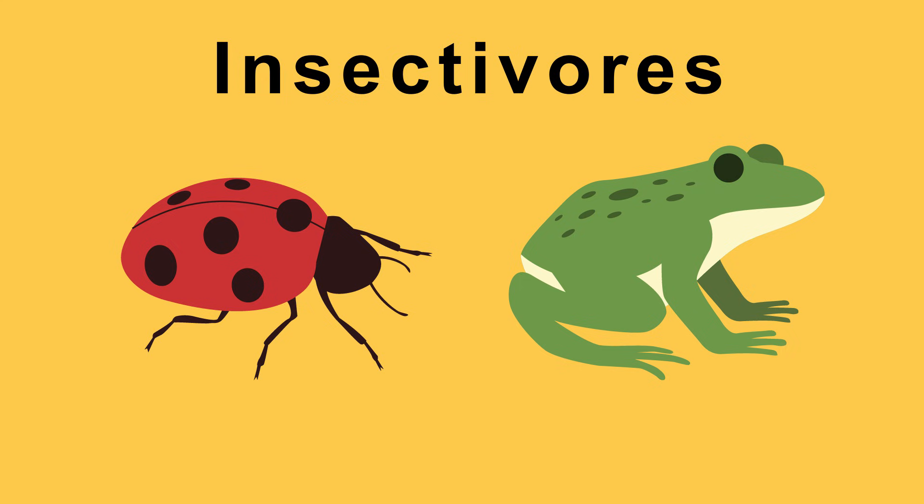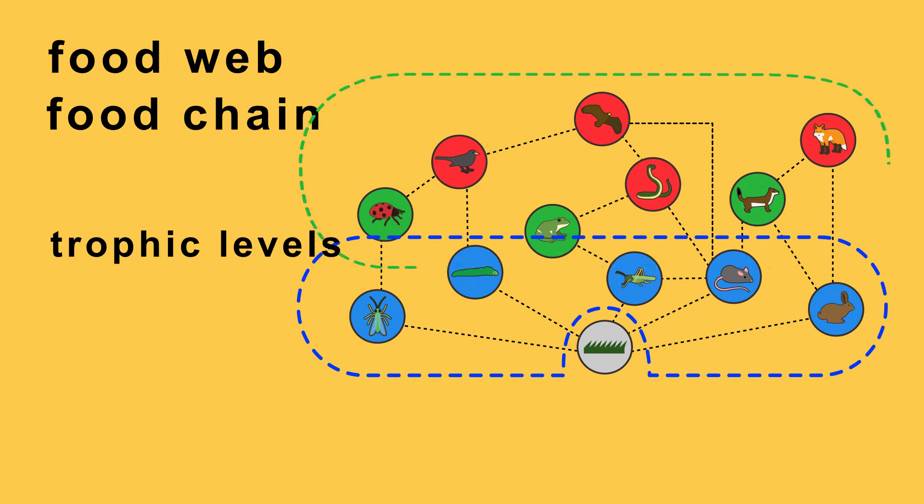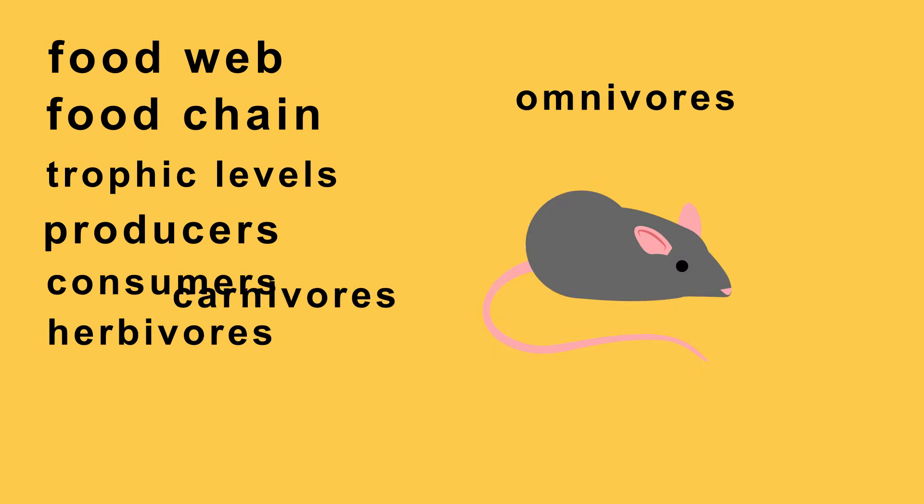So there we have a food web, food chains, trophic levels, producers, consumers, herbivores, carnivores, omnivores, insectivores. And so the final piece of the puzzle are decomposers.